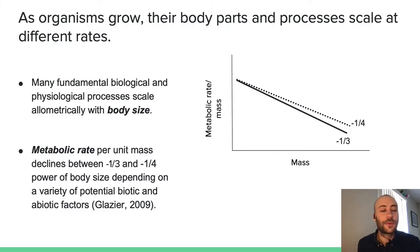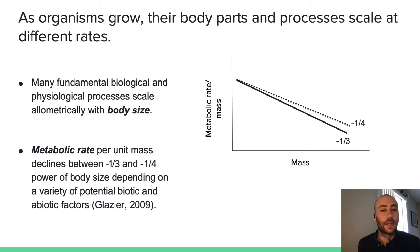As organisms grow, their body parts and processes scale at different rates. Many fundamental biological and physiological processes scale allometrically with body size. Metabolic rate per unit mass declines somewhere between the negative one-third and negative one-quarter power of body size depending on a variety of potential factors, as illustrated in the graph on the right.